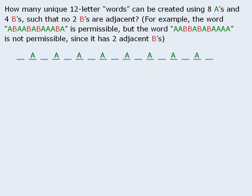We will place the 8 As such that there is one space before and after each A. At this point, the four Bs will be placed in four of these spaces. Notice that since there is only one space between each A, we can guarantee that no two Bs will be adjacent.